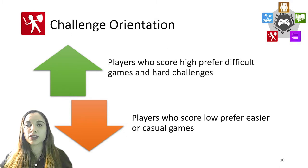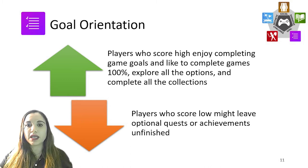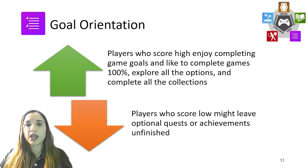Challenge orientation represents players who prefer difficult games and hard challenges; players who score low prefer easier or casual games. Finally, goal orientation represents players who enjoy completing game goals and like to complete games 100%, explore all the options, and complete all quests and collections. Players scoring low might leave optional quests or achievements unfinished. We propose our five-trait model to address building blocks of actionable game design.